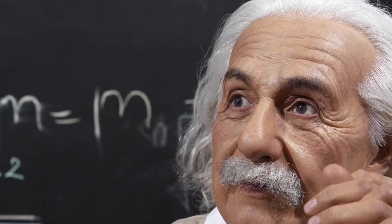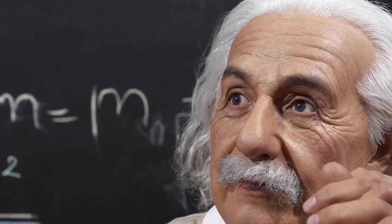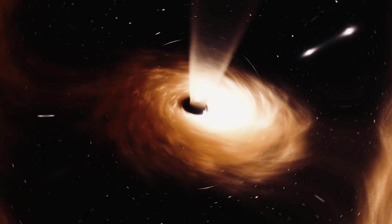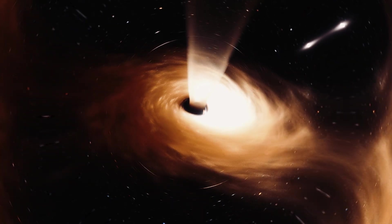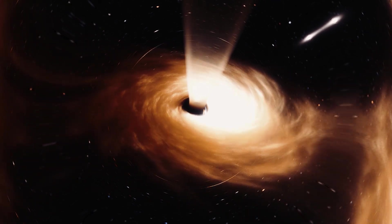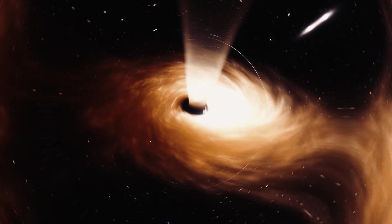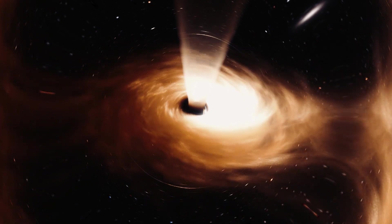The bright ring is hot gas falling towards the black hole, heated to incredible temperatures and moving at near light speed. The dark center, the shadow of the black hole, is the event horizon beyond which nothing, not even light, can escape.